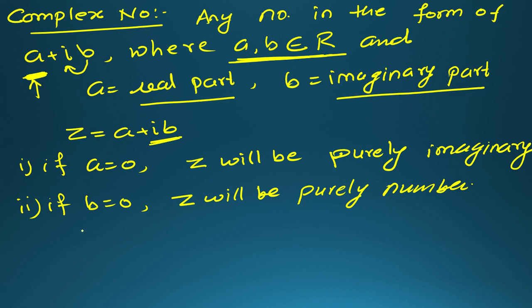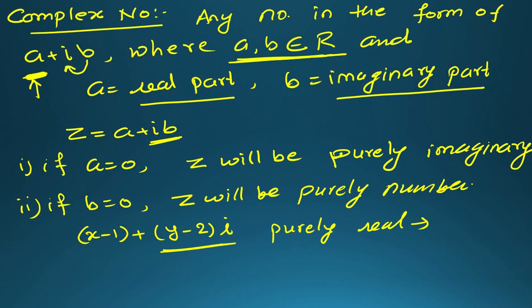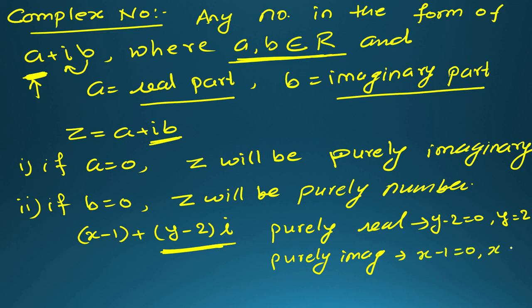For example, they may ask: for what values of x and y is the number (x-1) + (y-2)i purely real? For purely real, the imaginary part must vanish, so y minus 2 equals 0, meaning y equals 2. For purely imaginary, the real part must vanish, so x minus 1 equals 0, meaning x equals 1. Expressions may be harder but the concept remains the same.